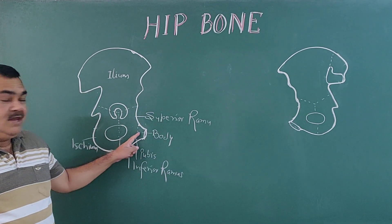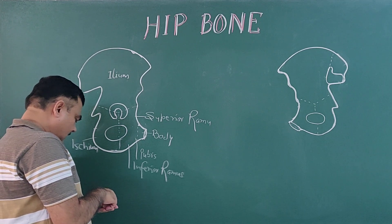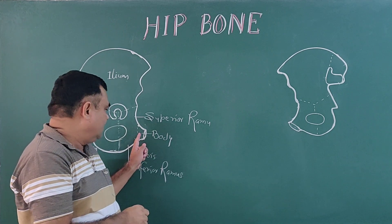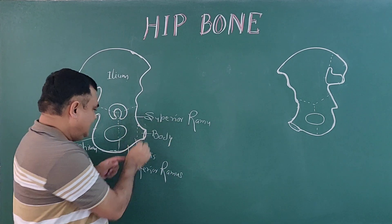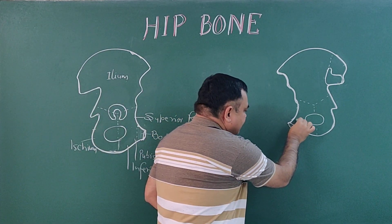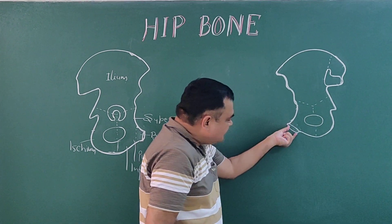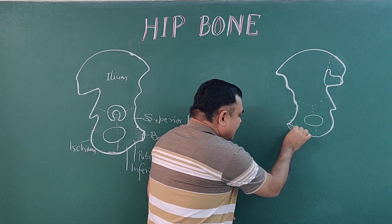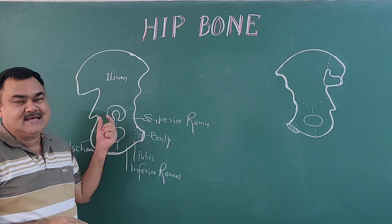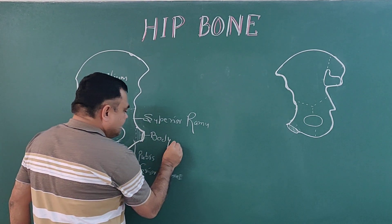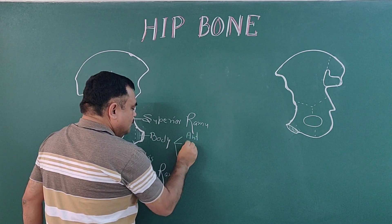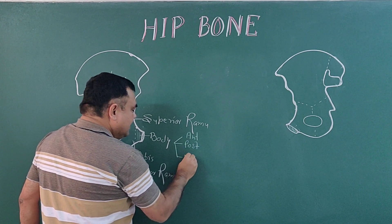If you see the body, it has three surfaces: the anterior surface, the posterior surface, and the medial surface. This is the anterior surface, this is the posterior surface of the body, and on the medial side this is the medial surface. So the pubic bone body has three surfaces: anterior surface, posterior surface, and medial surface.